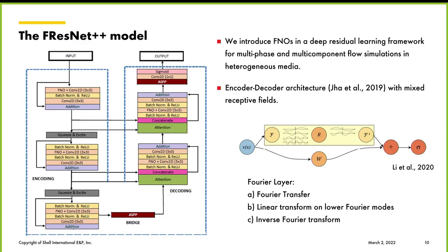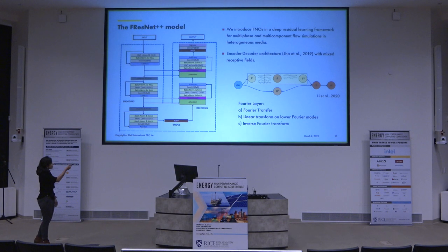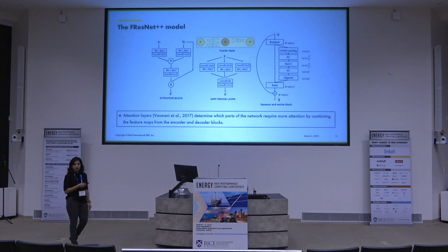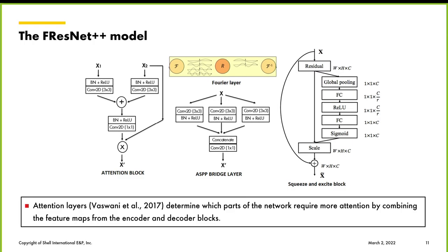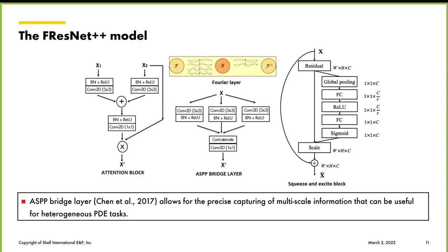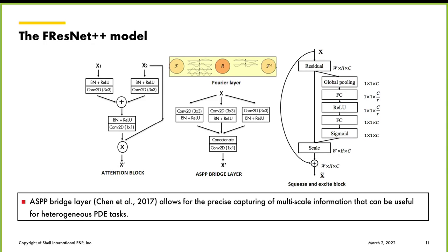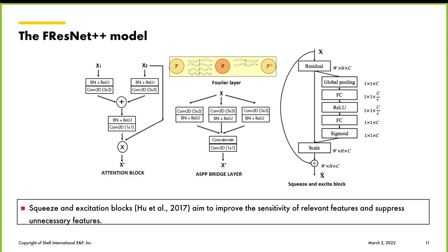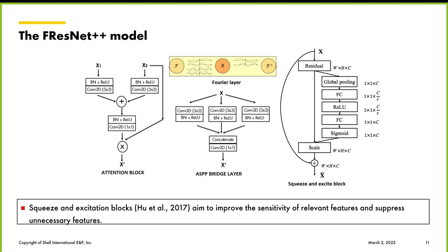The original authors claim that by composing linear integral transformations with a non-linearity and stacking multiple operations, you can achieve a good continuous solution approximation. The architecture also incorporates squeeze-and-excite blocks, attention layers, and the atrous spatial pyramid pooling bridge. The attention block increases effectiveness of feature maps by determining which parts require more attention, combining encoder and decoder feature maps. The ASPP bridge layer enlarges the field of view of filters via parallel atrous convolutions, helping capture multi-scale information for heterogeneous PDE tasks. The squeeze-and-excite layers improve sensitivity of relevant features and suppress unnecessary ones, improving generalisation across different datasets.